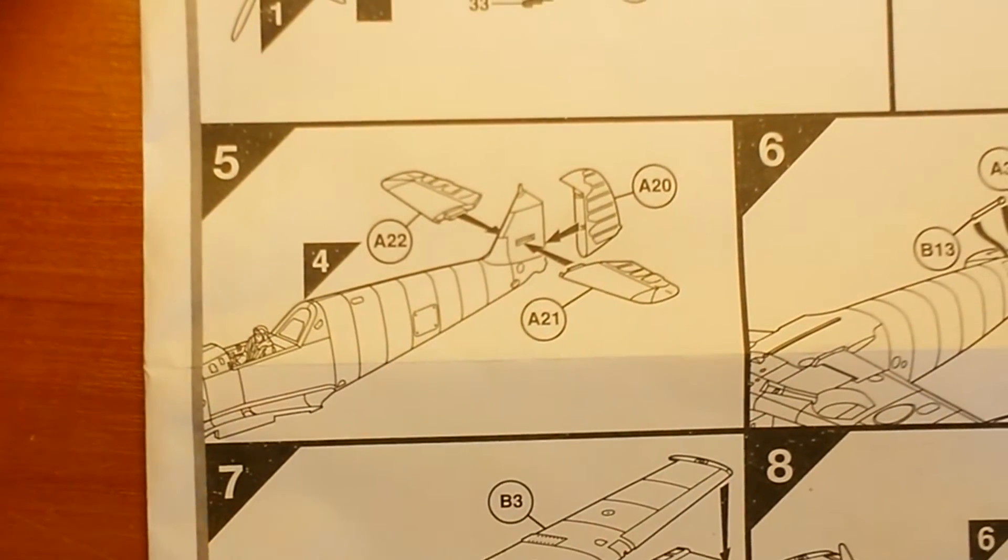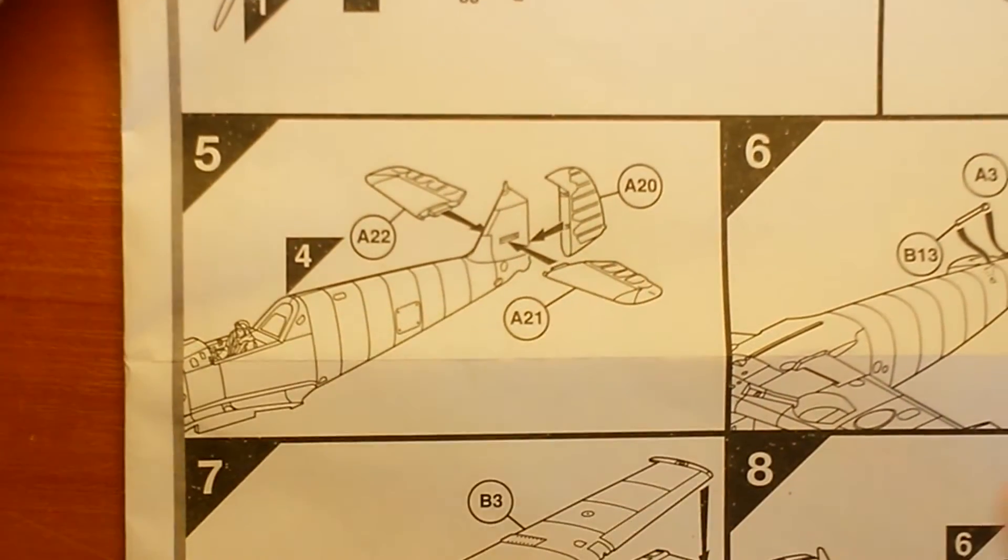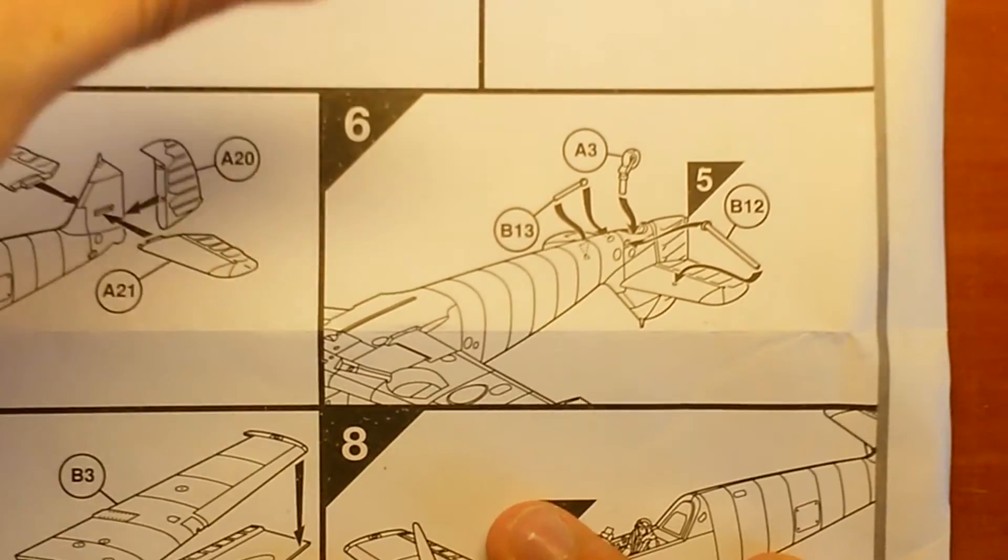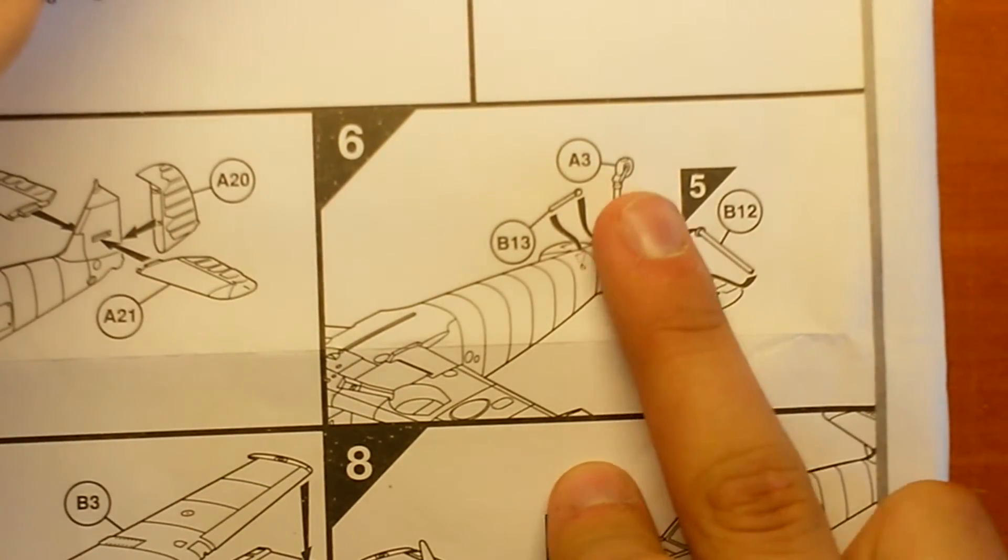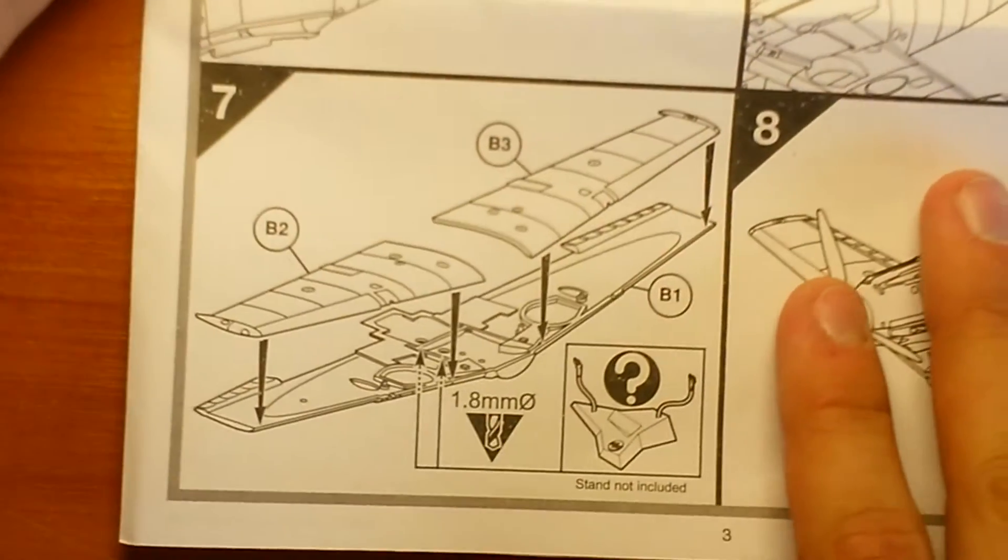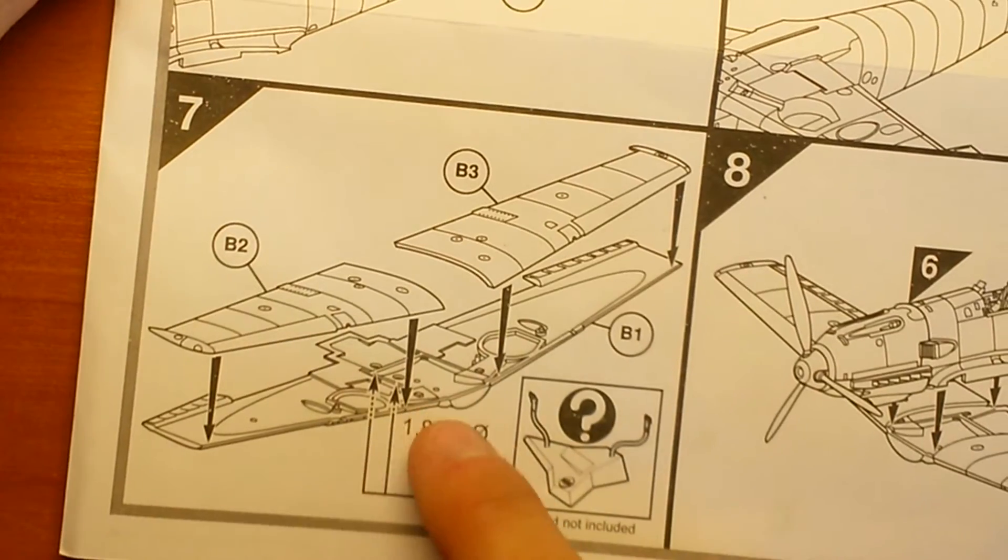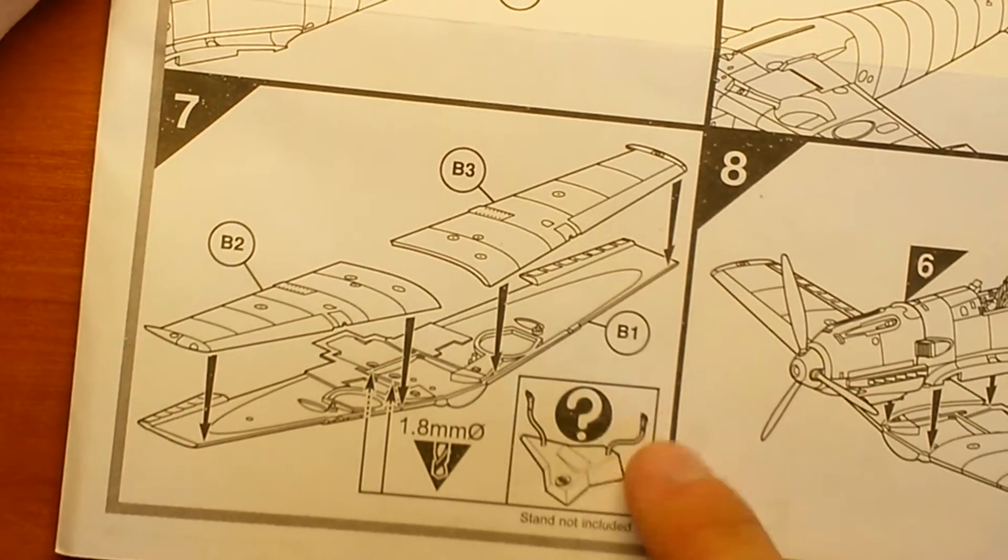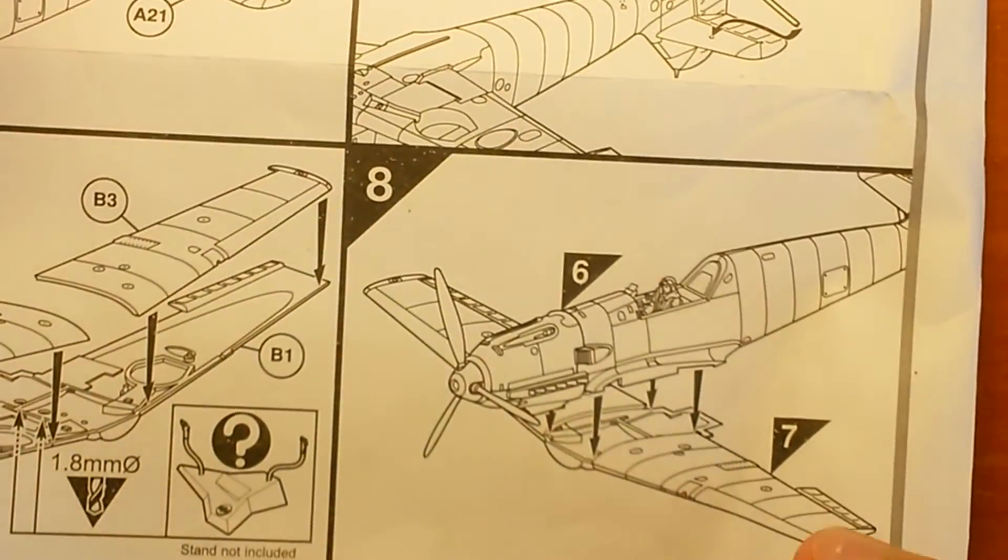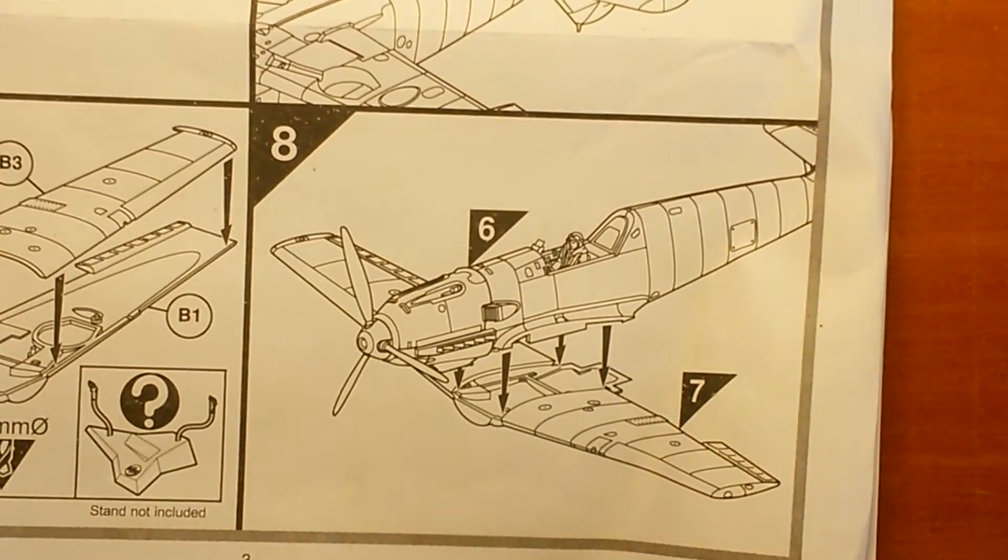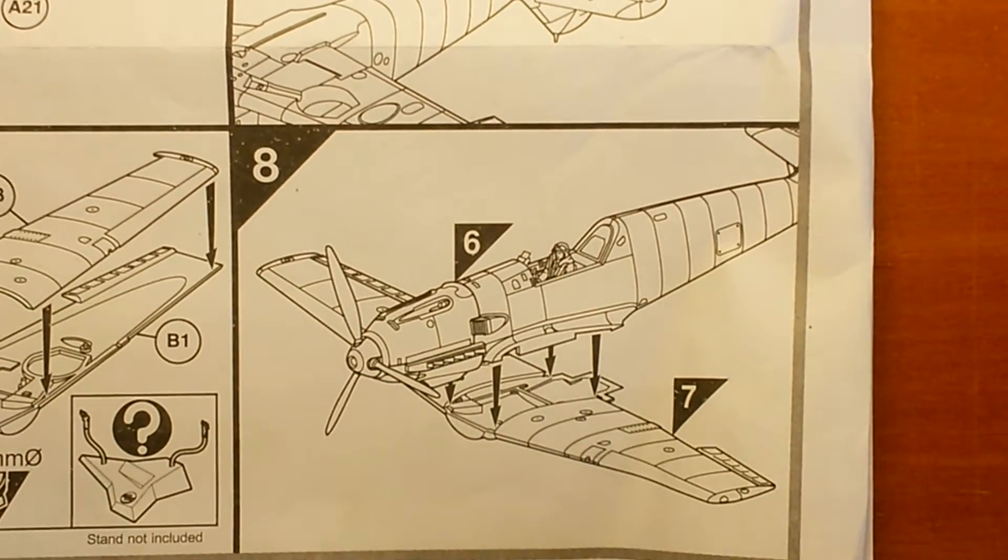Tail assemblings, the same with rudder as with the Spitfire, so you can position it how you want. Wings assembling. Now you can drill the holes into the lowering to insert the stand, which is not included. You need to buy it, but I actually don't know who uses this.